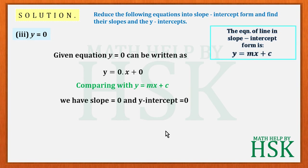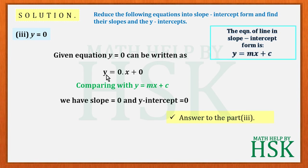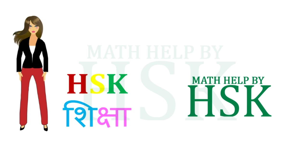So comparing y = 0·x + 0 with y = mx + c, slope = 0 and y-intercept = 0. This is how the equation y = 0 is written in slope-intercept form, and that is the answer to part three.